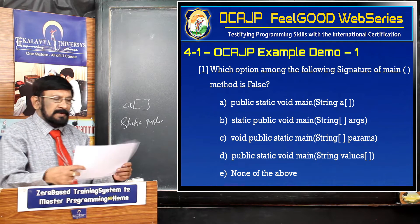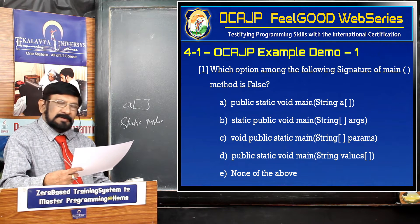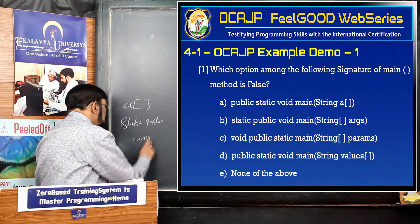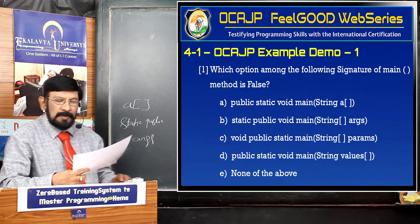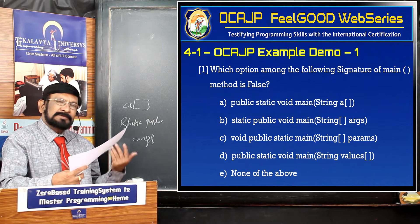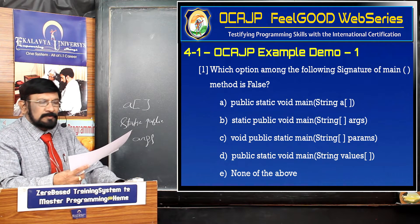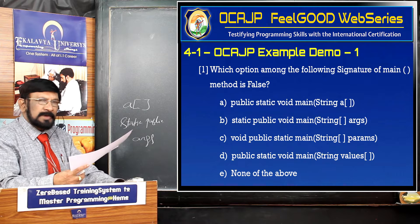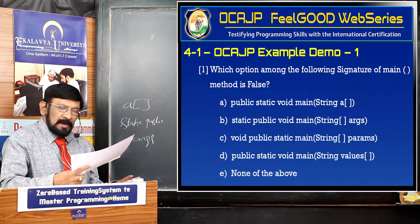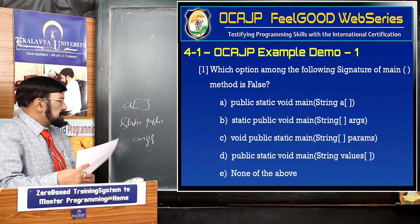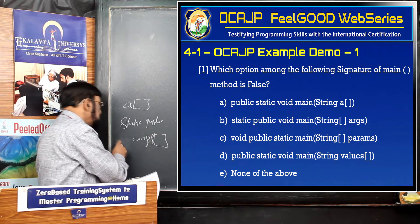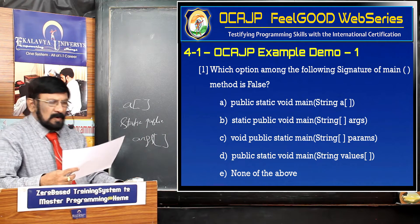Option A: public, static, void, main, String a[]. Here, 'args' is a user-defined identifier — instead of 'args', any relevant name you can use. I used 'a', and nothing is wrong with that. Also, the square brackets can be placed after the identifier — 'String a[]' is valid. So Option A is correct.